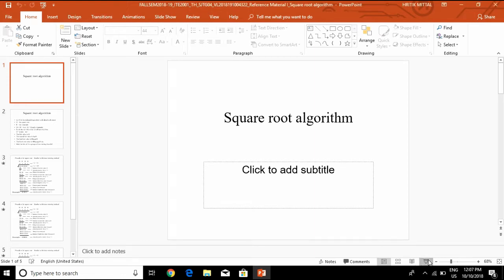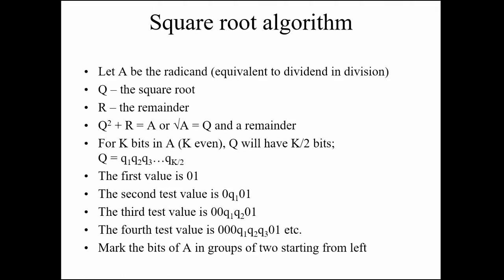Square root algorithm: Let A be the radicand — equivalent to the dividend — Q the square root — equivalent to the divisor — and R the remainder. We know that Q squared plus remainder R equals A, or equivalently, the square root of A equals Q with remainder R.